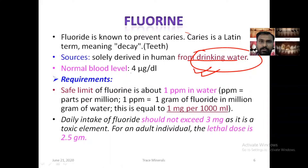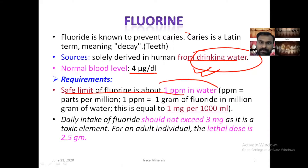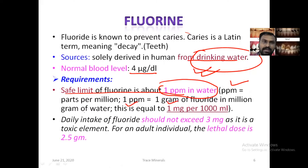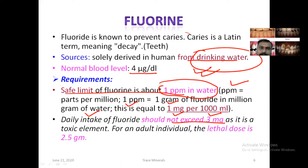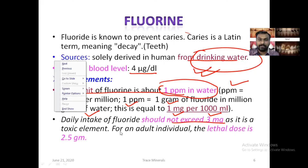The normal blood level of fluorine is around 4 microgram per deciliter. The safe limit of fluorine in water is about 1 ppm (parts per million), which equals 1 gram of fluorine per million grams of water, or 1 milligram per 1000 ml. Daily intake of fluoride should not exceed 3 milligrams as it is a toxic element. For an adult, the lethal dose is around 2.5 grams.